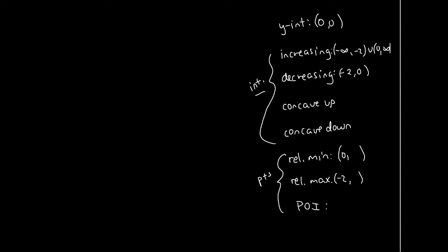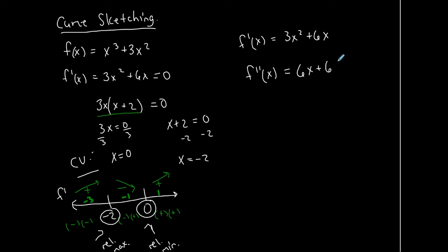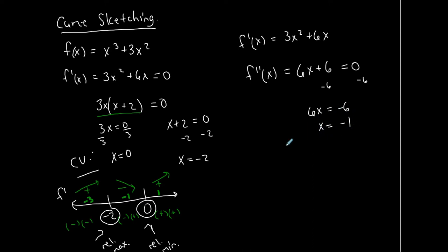Now let's talk about intervals of concavity and points of inflection, which come from the second derivative. Rewriting the first derivative as 3x² + 6x makes it easier to differentiate. The second derivative is the derivative of f′, which is 6x + 6. Setting the second derivative equal to zero and solving: 6x = −6, so x = −1.